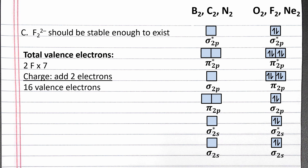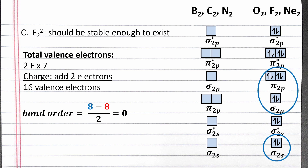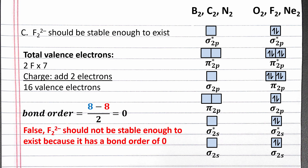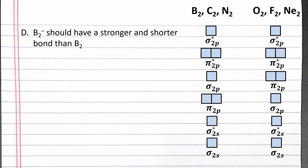To calculate bond order, we take the number of electrons in bonding molecular orbitals, subtract the number of electrons in antibonding molecular orbitals, divided by 2. The bonding molecular orbitals, circled in blue, have 8 electrons. The antibonding molecular orbitals, circled in red, also have 8 electrons. Since our bond order is 0, F₂²⁻ should not be stable enough to exist. We have the same number of electrons in bonding as in antibonding molecular orbitals, so creating F₂²⁻ would not lower the overall energy of our system.